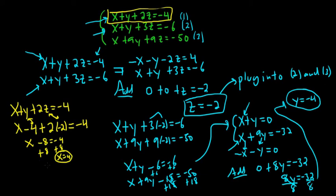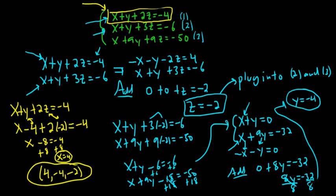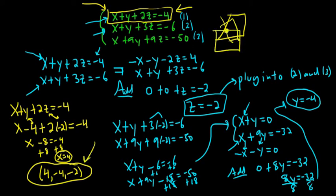So we have three numbers — x, y, and z — and they go in that order: 4, negative 4, negative 2. That's the point where all of these planes intersect. Each equation is the equation of a plane, so you have three planes in space all intersecting in one little point, and that's the point we're finding. To recap: you pick two equations and eliminate a variable — we took the first two, eliminated x and y, got lucky, and found z. Then we plugged it into the other two and finished from there.